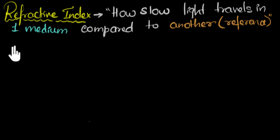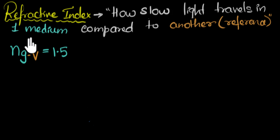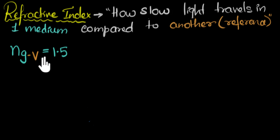So let's say we have been given that the refractive index of glass with respect to vacuum — that's how we usually write refractive index, N is the letter we use for refractive index — is given as 1.5. Now, what does this mean? Well, if we go back to the definition, this number is telling us it's a measure of how slow light travels in glass, because glass is our medium, compared to vacuum. This time vacuum is our reference medium. So in other words, this is telling us that the speed of light in glass is 1.5 times slower compared to the speed of light in vacuum. And I think this will make more sense if I write it down mathematically.